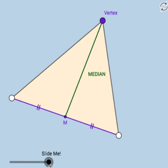A median of a triangle, therefore, is a segment that connects any vertex of the triangle to the midpoint of the side opposite that vertex. Notice here that the purple side is opposite that purple vertex right here.